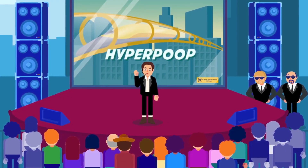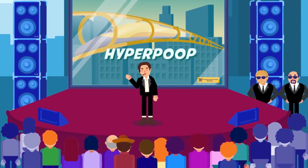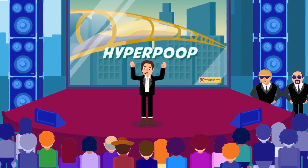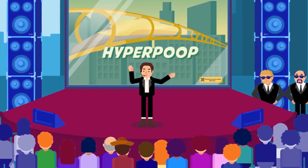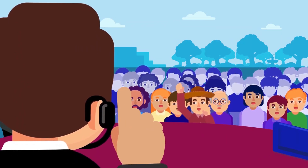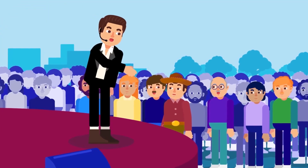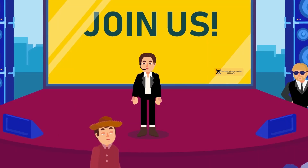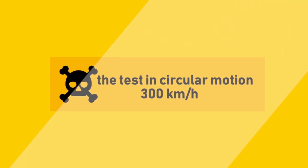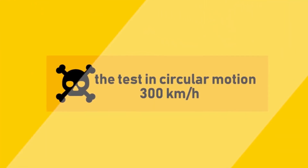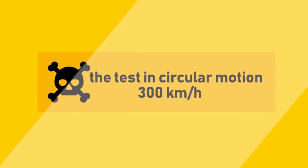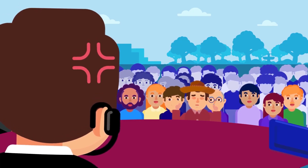A company called Musk Melon is introducing its new prototype of a super-fast transportation system and currently opens recruitment for volunteers to join system testing for thousands of dollars in incentives. Do you want to participate in the trial run? Well, it does seem like it's too good to be true. The catch is the high-speed transportation will be run in a looping track, or circular motion, reaching 300 kilometres per hour in one second. But what is circular motion?